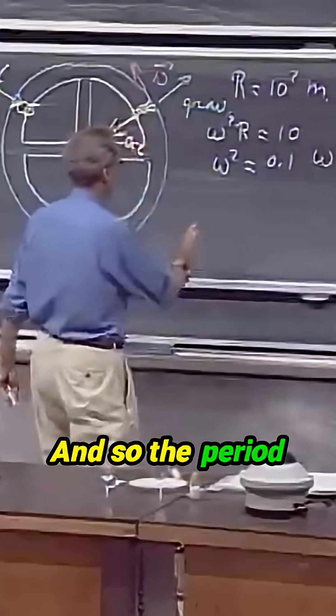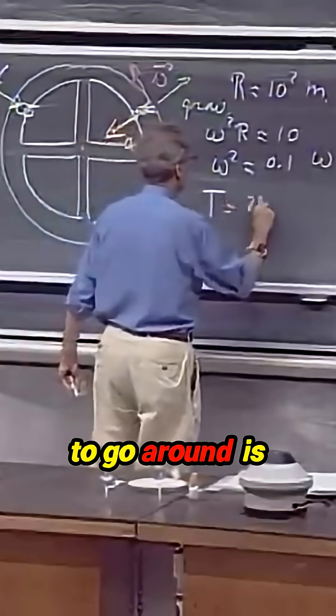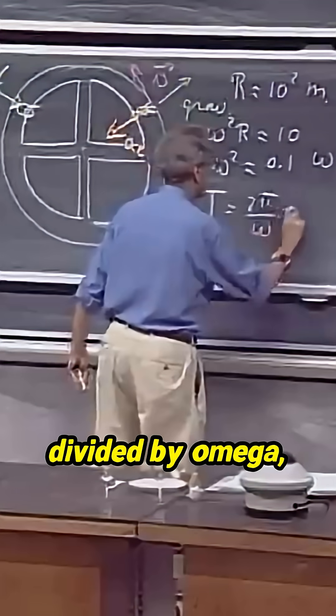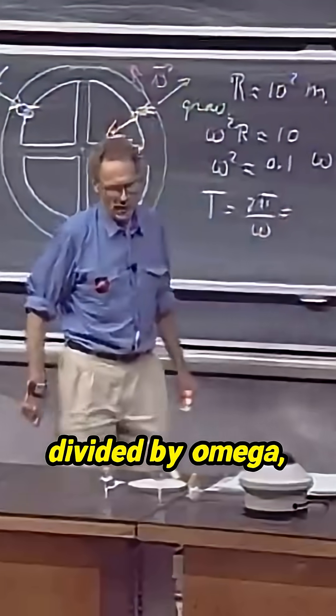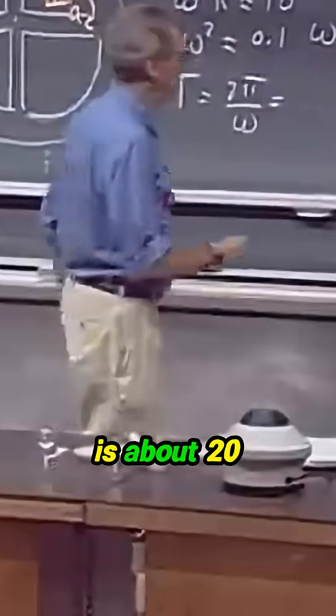And so the period to go around is about 2 pi divided by omega, and that is about 20 seconds.